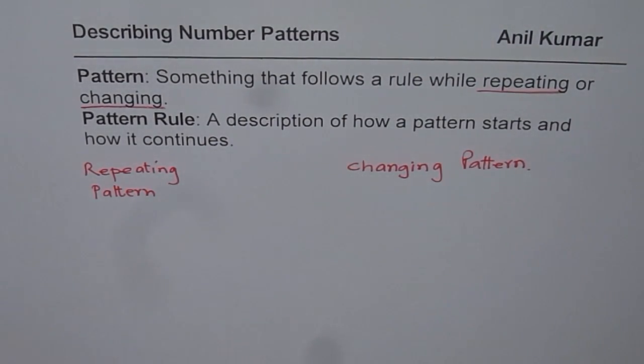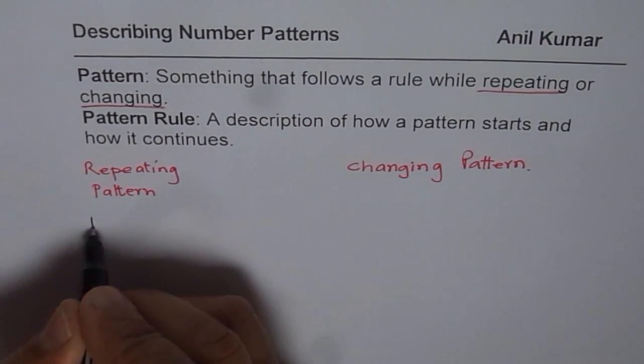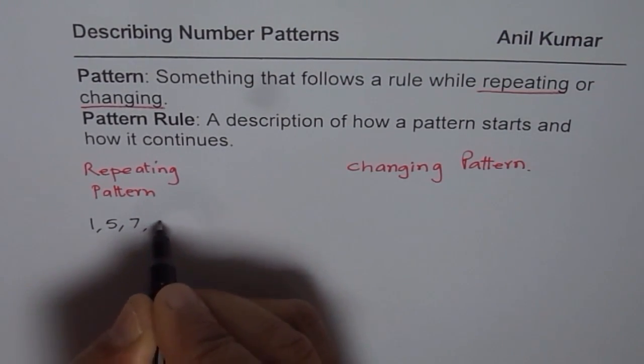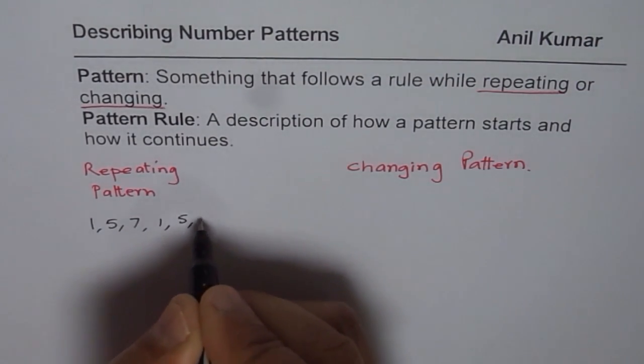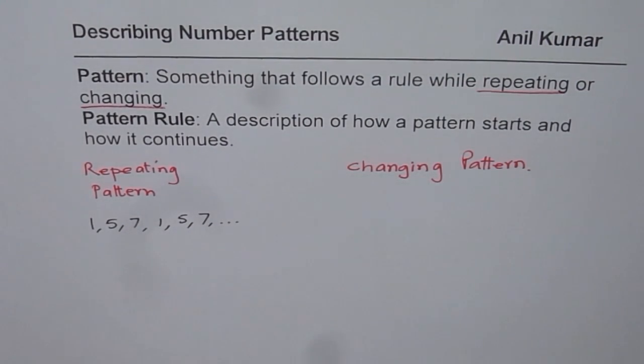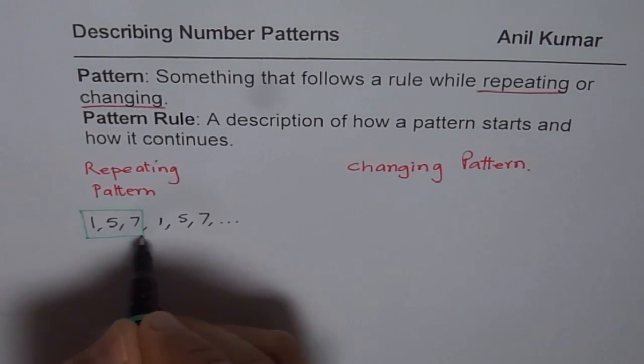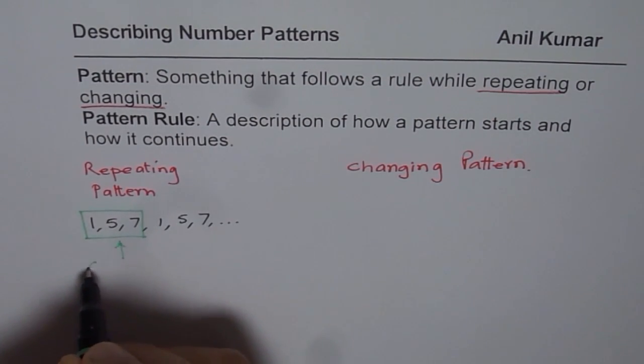Now repeating patterns will have a group which repeats. For example, I could write numbers 1, 5, 7 and just repeat these numbers: 1, 5, 7 and so on. As you can see, we have a group here which is called the core group. 1, 5, 7 repeats, and this is called the core group.